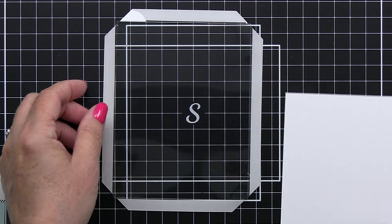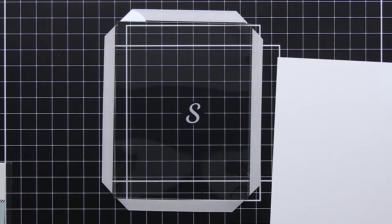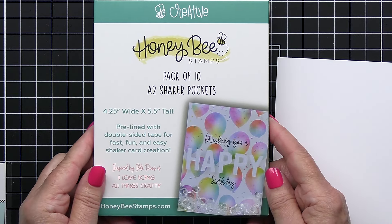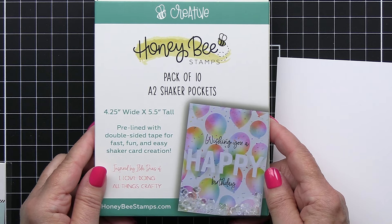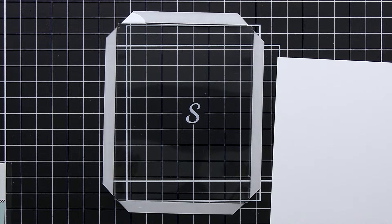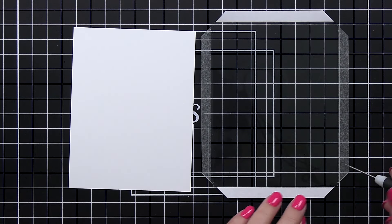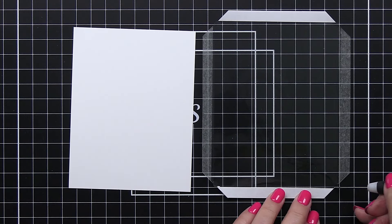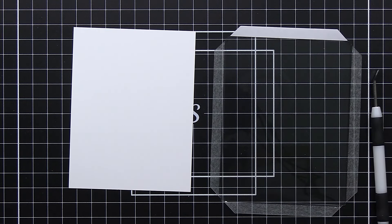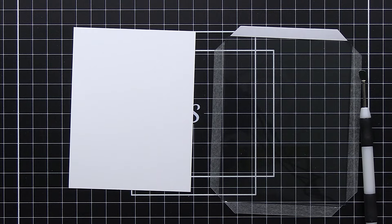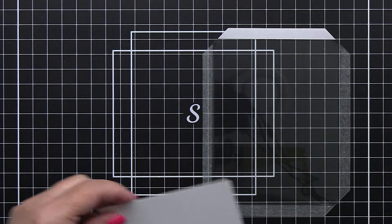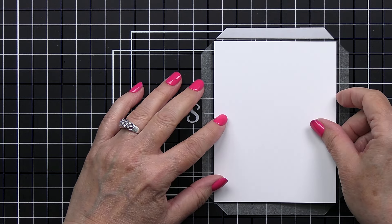We're going to get ready for our shaker element. So these are the shaker pockets available from Honey Bee. These are the A2 shaker pockets inspired by Ilda Diaz who's one of the design team members who invented the shaker pocket, and so she actually is our inspiration for this product which is awesome. You just cut your white cardstock or whatever cardstock you're using to go inside just a little bit smaller than your A2 dimension.